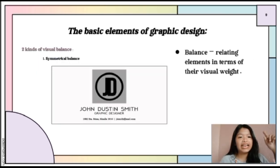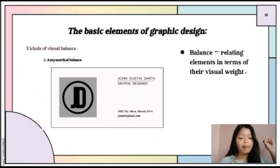Lastly is balance. Balance has two kinds. First is symmetrical balance, where each half is identical or visually similar to the other half. Second is asymmetrical balance, where both sides of your composition do not contain the same elements.